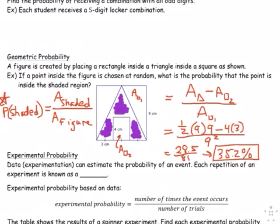So in geometric probability, the key idea is that you always take the area of whatever the shaded region is and you divide that by the area of the entire figure. Oftentimes you need to subtract out areas that are not part of the shaded region.